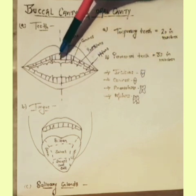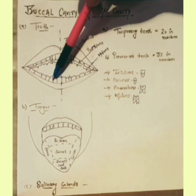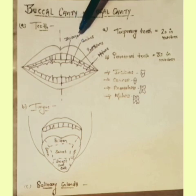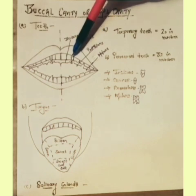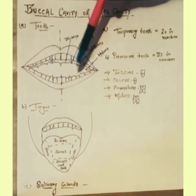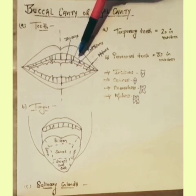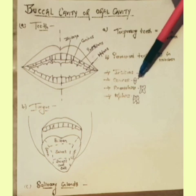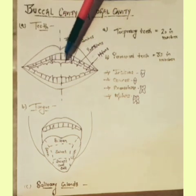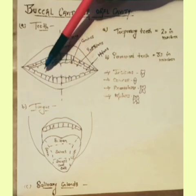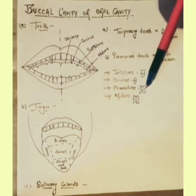The four front flat teeth in each jaw are called incisors, also known as biting teeth. The two sharp pointed teeth in each jaw that lie on either side of the incisors are called canines — also called tearing teeth. Four teeth on either side in each jaw that help chew and grind food are called premolars, known as grinding teeth.